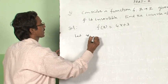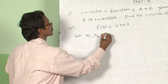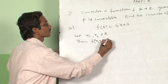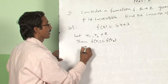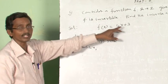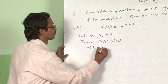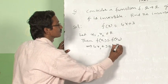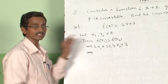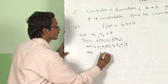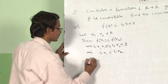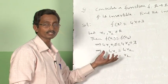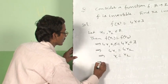Then F(x₁) = F(x₂) implies 4x₁ + 3 = 4x₂ + 3. Cancelling 3 on both sides gives 4x₁ = 4x₂, which implies x₁ = x₂. So clearly the function F is one-one.